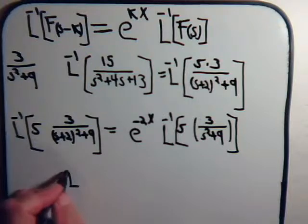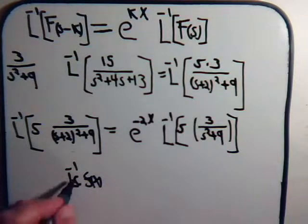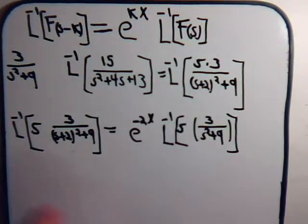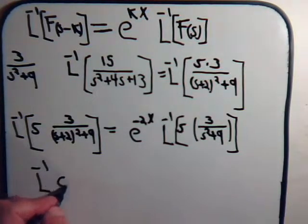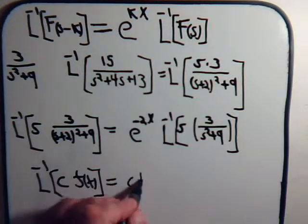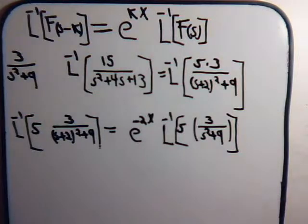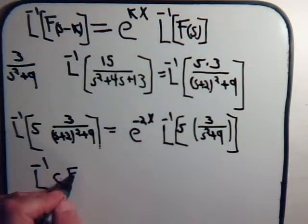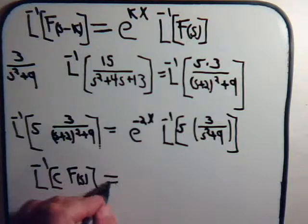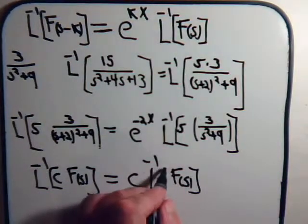Now, the inverse Laplace transform of any function, this will be multiplied by a constant. Inverse Laplace transform of a constant times a function, it's just the constant times the inverse Laplace transform. We're taking the inverse Laplace transform of a constant times some function, and that's the same as the constant times the inverse Laplace transform of that function.